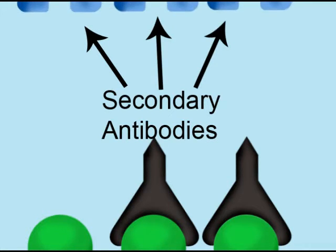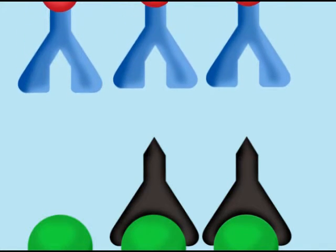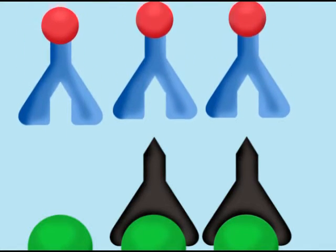Antibodies that bind to HIV antibodies are added to the plate. These antibodies have been attached to enzymes that allow technicians to see them under fluorescent light.